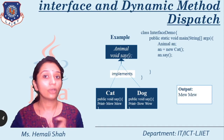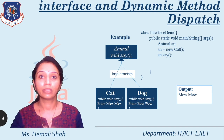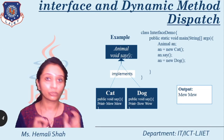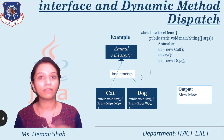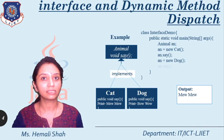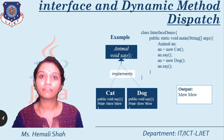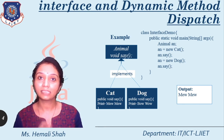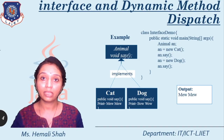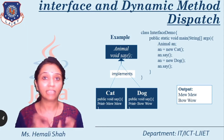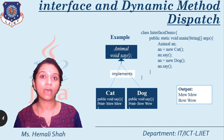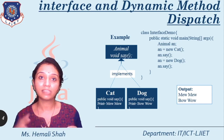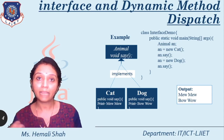Now I can also assign the object of dog class to this 'an' variable. Dog is also a child class of the animal interface, so the super class variable can refer to the sub class instance. Now try to call the function an.say. Whenever you make the call, 'an' currently refers to the object of dog class, so it invokes the say function of dog class, and the say function in dog class prints 'bow wow'. So here you will get the output bow wow. The same syntax an.say prints different output because 'an' always refers to the current object instance.